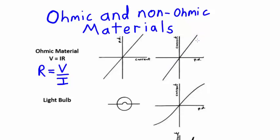The problem is that not all materials obey Ohm's law, and these materials are called non-ohmic. This means that their resistance is not always constant.